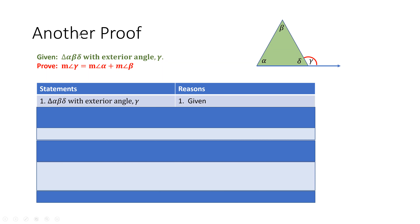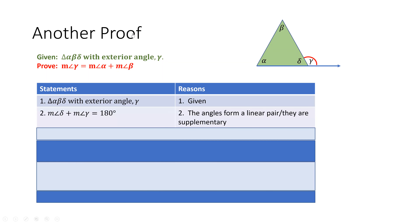Now if you look at this triangle, there should be some things we can already say. If we look closely at angles delta and gamma, we can see that they lie on a straight line. The exterior angle of any triangle will always form a linear pair with the adjacent interior angle. So together, delta and gamma make a straight line, and their sum must equal 180 degrees. That's the next statement in our proof: the measure of angle delta plus the measure of angle gamma equals 180 degrees.